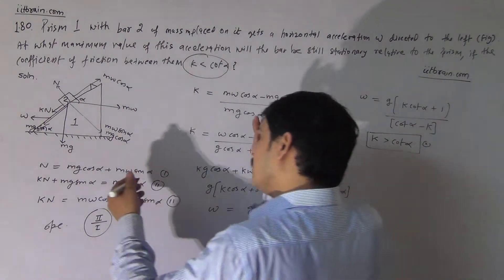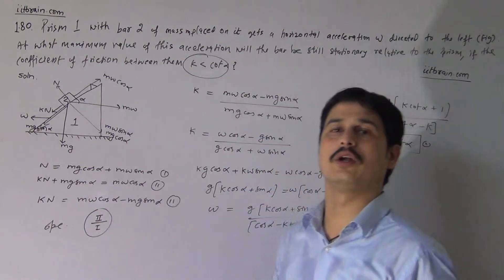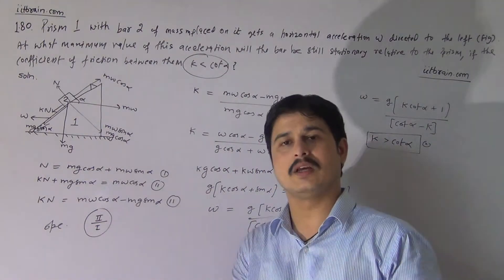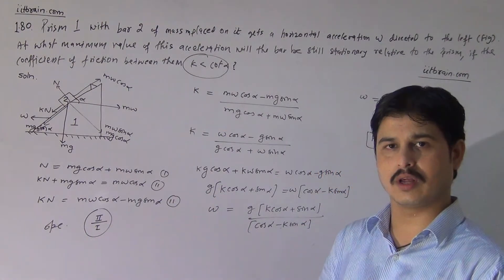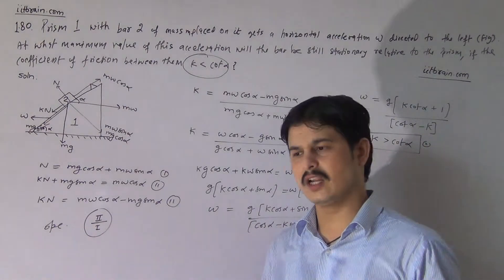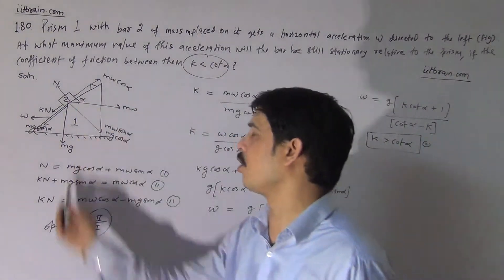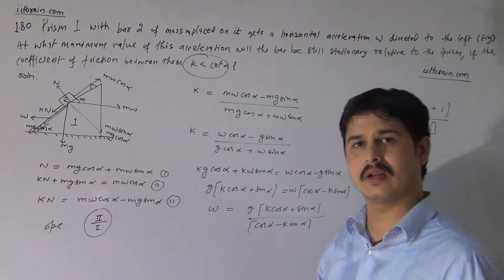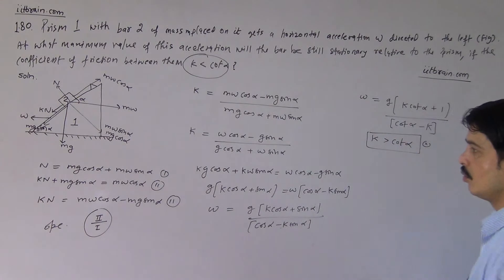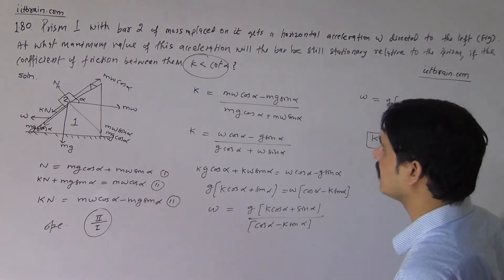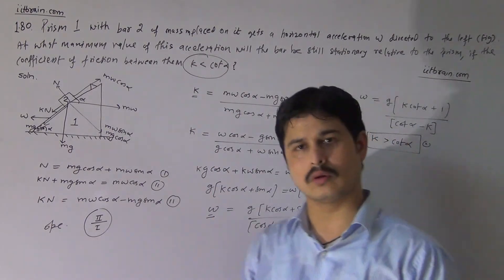This question can also be solved by another method. One approach is to resolve all the forces along horizontal and vertical directions, since when the body is at rest there is no constraint on which direction we choose for equilibrium. By balancing forces in vertical and horizontal directions, the same result can be obtained.